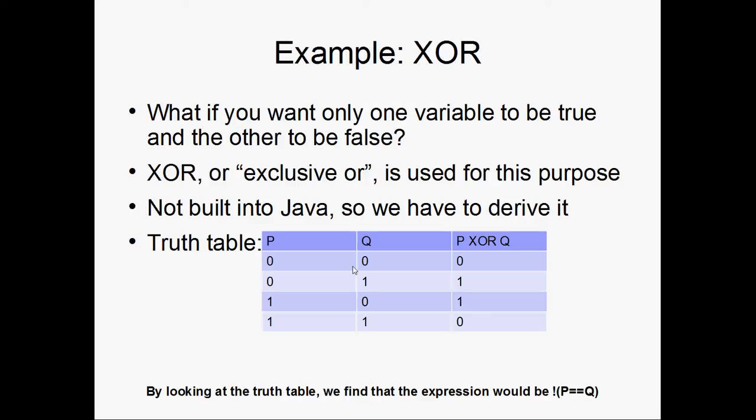So we make a truth table and we figure out that it's false only when P and Q are equal to each other. So we just take the negation of P == Q. And remember, we learned this in the last lecture.